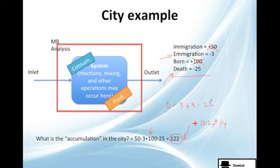Which will give you minus 28. And what does that mean? Why do we have a negative number? It means that the city is losing, in general, population. So 28 persons per year are disappearing.